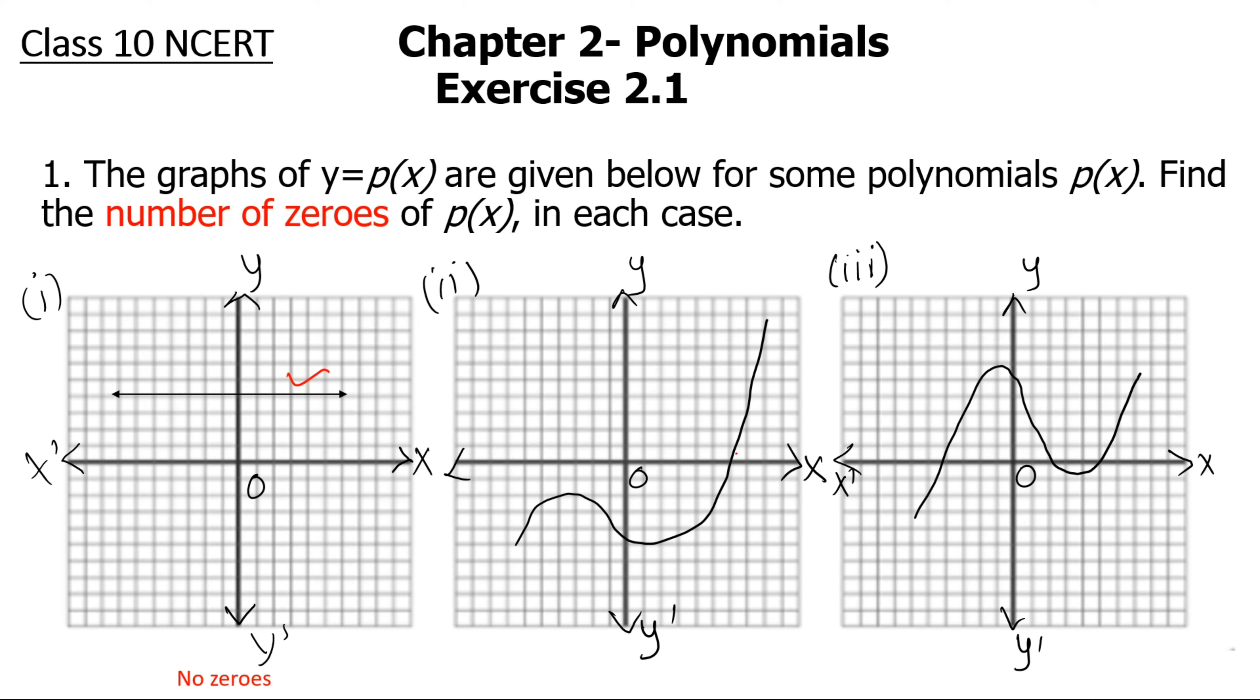Second one, it's intersecting here, just one point. So therefore, one zero. Next one, one point, two, three. Three points of intersection. So that means three zeros.